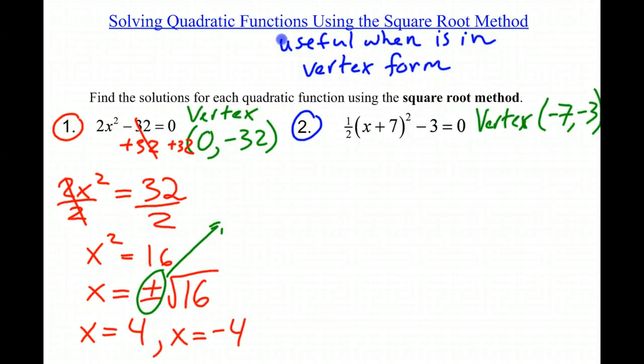Looking at this second problem, I have this 1/2 and this -3 that's in the way of the (x + 7)². So I want to get rid of everything surrounding that (x + 7)² and move it to the other side before I take the square root.